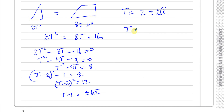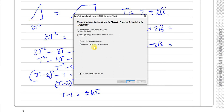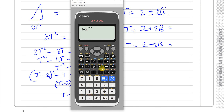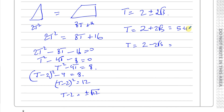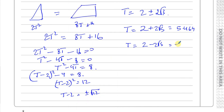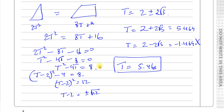There are two solutions: T = 2 + 2√3 and T = 2 − 2√3. The second gives a negative value (approximately −1.464), which is not physically meaningful — you cannot have negative time. So the answer is T = 2 + 2√3 ≈ 5.464 seconds.